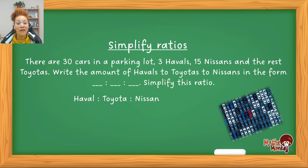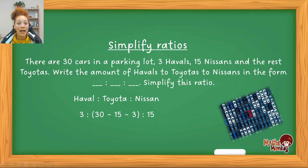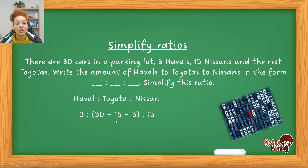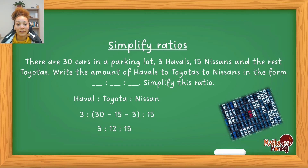The Havals are 3 and the Nissans are 15. They don't give you the total Toyotas — just the total number of cars. To find the Toyotas, take the total (30) and subtract the Nissans (15) and the Havals (3), giving 12 Toyotas. So the ratio is 3 : 12 : 15.